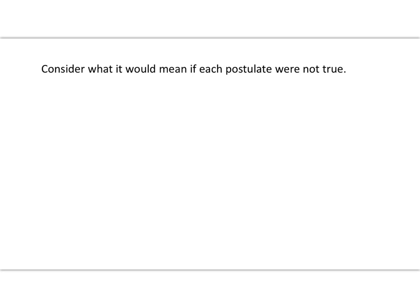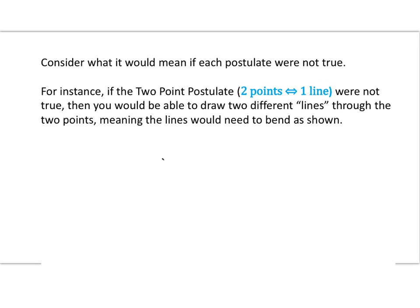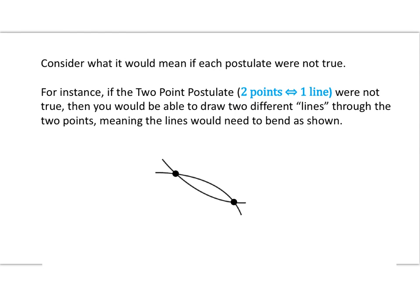Again, we're focusing on what our eyes appear to see, and we must have enough information in our diagrams to communicate what's going on. So consider what it would mean if each postulate were not true. Well for instance, if the two-point postulate were not true, then you would be able to draw two different lines through two points, meaning the lines would need to bend as shown.